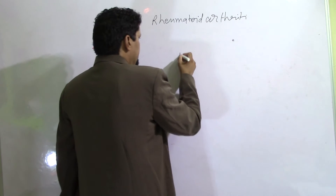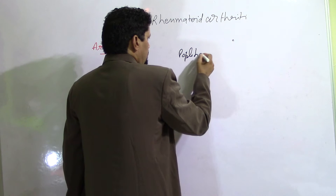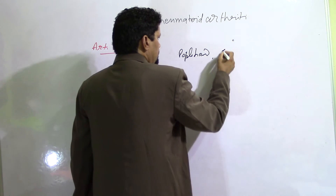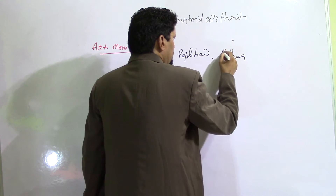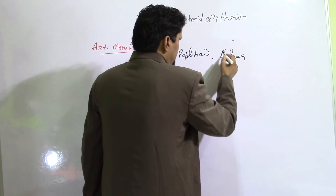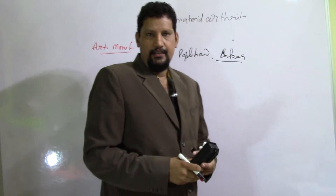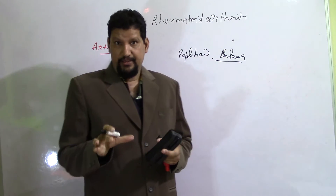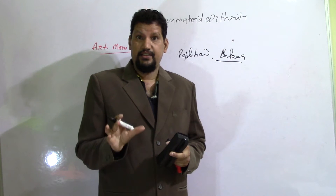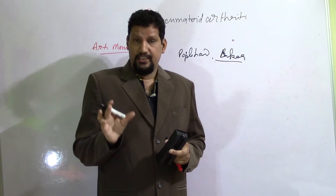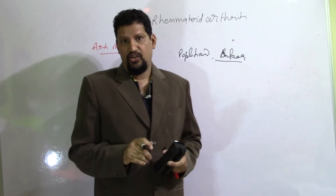There will also be a popliteal or Baker's cyst in the popliteal fossa. While the knee is extended, a swelling forms in the posterior part of the knee, known as a Baker's cyst or popliteal cyst, formed by inflammation of the synovium of the knee joint.